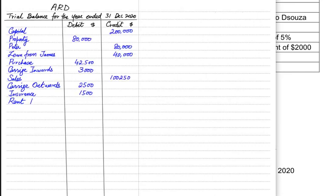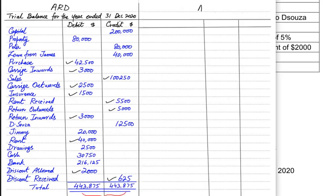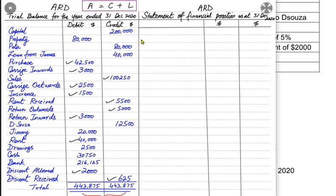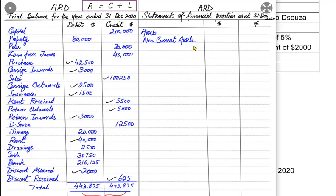Now let's quickly prepare an SOFP from the question data. If you have already studied how to prepare an income statement, we can now make a statement of financial position — also known as a balance sheet — for Mr. ARD or ARD Traders. Assets equal capital plus liabilities. We write two types of assets: non-current and current. The items not yet ticked from the income statement preparation will be taken to the SOFP.